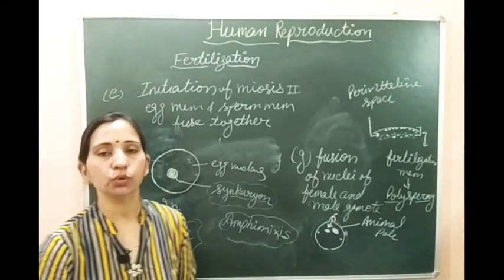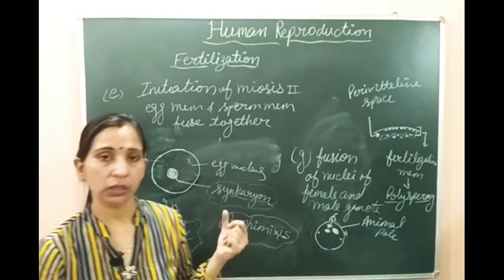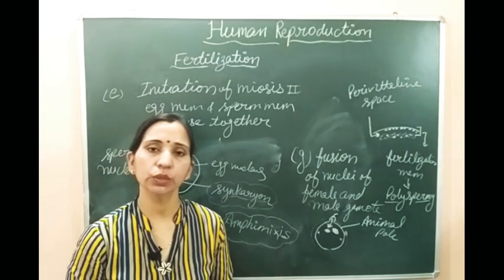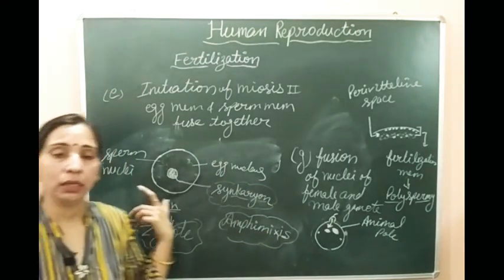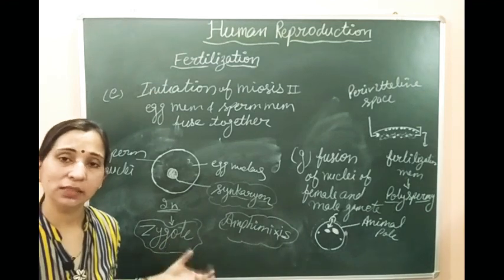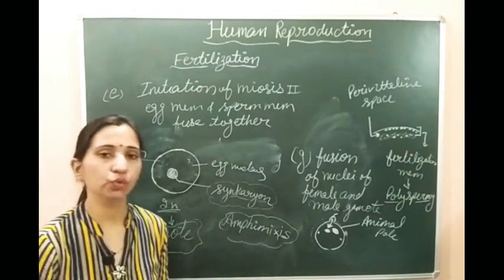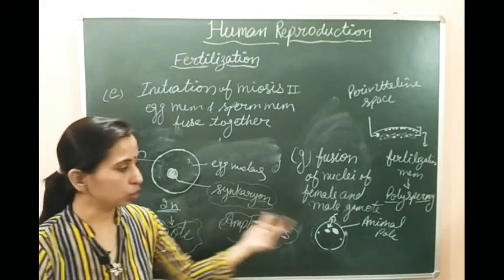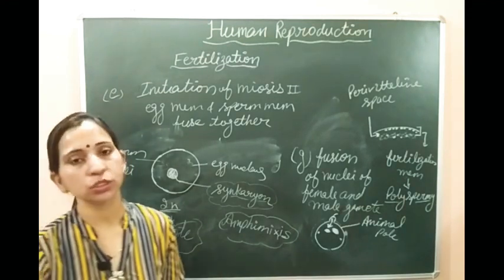We have now completed the complete process of fertilization. Regarding the significance of fertilization: the haploid gametes - both male and female - are formed, and when these two haploid gametes join together they form a diploid zygote. By making haploid gametes, the ploidy is maintained so that the zygote formed has only two sets of chromosomes and the chromosome number does not increase. Also, polyspermy is avoided through the processes described.